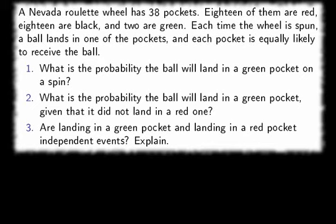Number one, what is the probability the ball will land in a green pocket on a spin? Well, since the outcomes are equally likely, we should be able to do this by counting, which means we need to find out how large the sample space is. So it would be reasonable to write down the sample space.